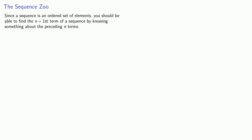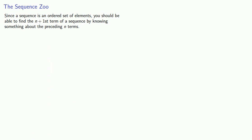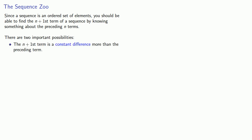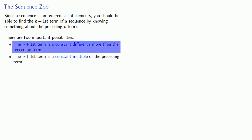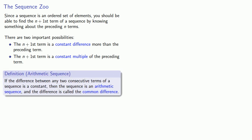Since a sequence is an ordered set of elements, you should be able to find the (n+1)th term of the sequence by knowing something about the preceding n terms. In the worst case scenario, you have to know all of the preceding terms in order to figure out the next term, and that makes for a very difficult problem. But we can take a look at a simpler problem. There are two important possibilities. First, the (n+1)th term is a constant difference more than the preceding term. And second, the (n+1)th term is a constant multiple of the preceding term. In the first case, we'll end up with an arithmetic sequence.